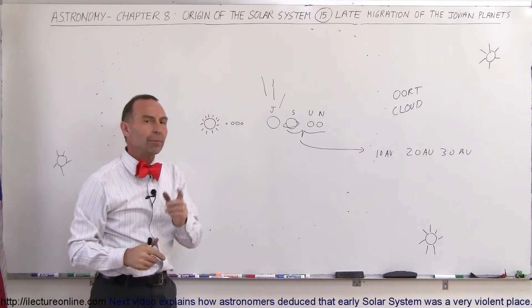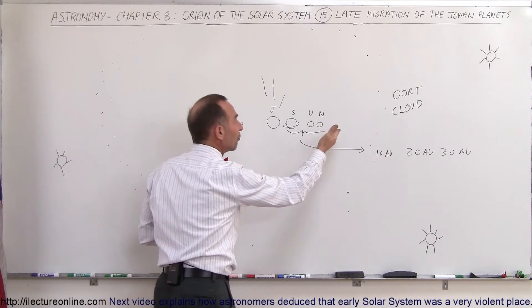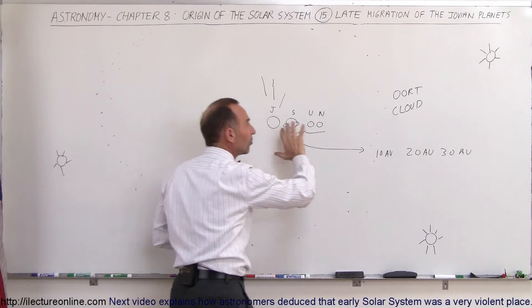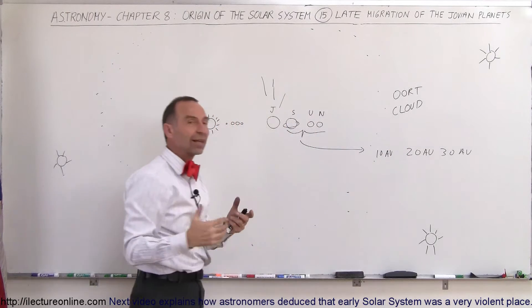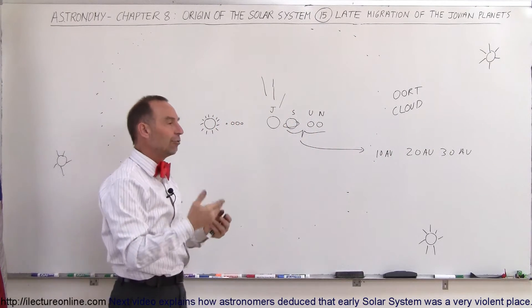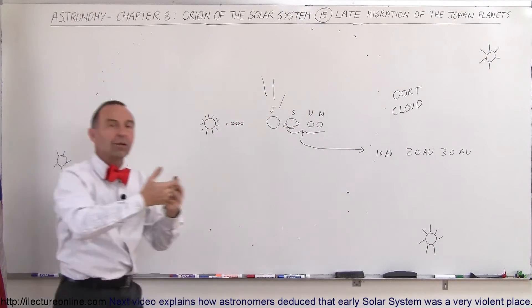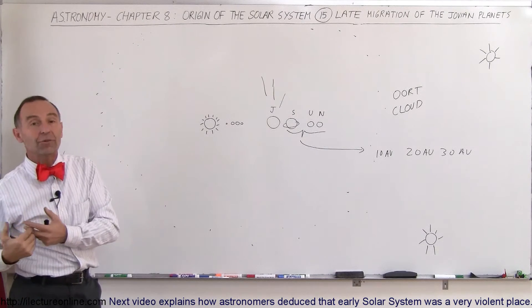Saturn, Uranus, and Neptune probably kicked a bunch of debris further inward and caused the planets, therefore, to move outwards, kind of like the conservation of momentum. If you push an object in one direction, the pushing object will then move in the opposite direction.